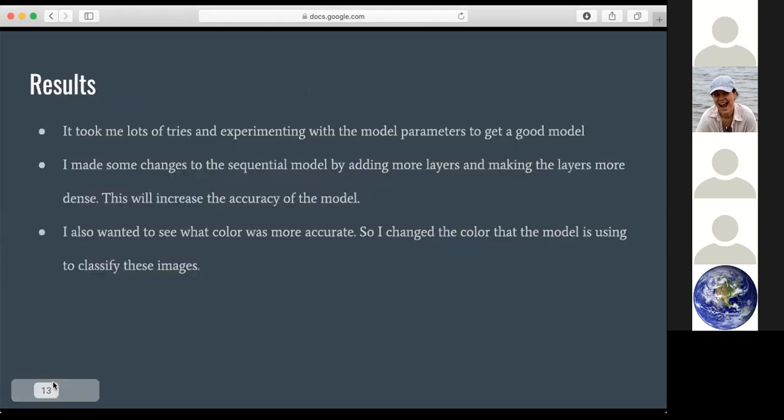So it took me a lot of tries and experimenting with the model parameters to get a good model. I made some changes to the sequential model by adding more layers and making the layers more dense. I also wanted to see what color was more accurate. So I changed the color that the model is using to classify these images.